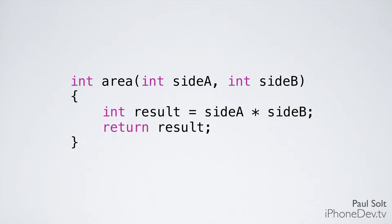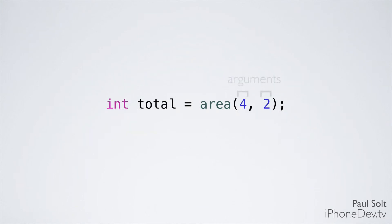Rather than writing the calculation every time we need it — `int result = side_a * side_b` — we can just call the area function and pass it arguments. In the main function, we say we want to calculate the area with side_a of 4 and side_b of 2. Those values are inserted into our method, and if we step through this, the total is going to result in 8.